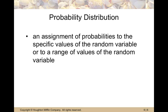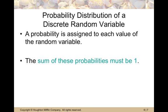A probability distribution is another vocabulary term we need to understand. It's an assignment of probabilities to the specific values of the random variable in the case of discrete random variables, or to a range of values of the random variable in the continuous case. The sum of these probabilities must be one. If you have every event in the sample space defined and you have all the probabilities there, they have to add up to one.